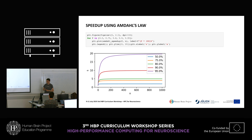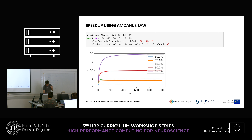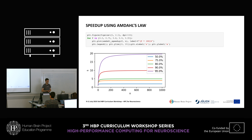Let's go to 90 percent — so one-tenth of our code remains serial. Maximum speed-up is 10, and it's not even as if we reach this right away; maybe at 100 or 200 processors we reach this maximum speed-up. At 95 percent parallelizable, the maximum speed-up is 20, and at 1,000 processors I haven't reached it yet.